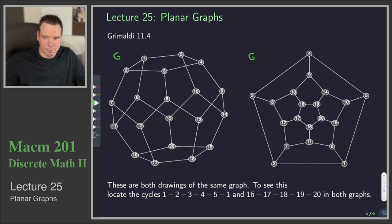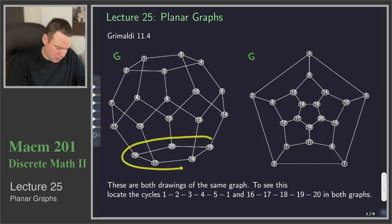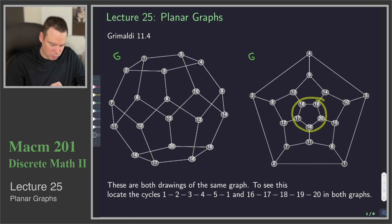How can we check to see if they are the same graph? You can notice that there is a cycle on the vertices 1 through 5 here, and there is also a cycle on the vertices 1 through 5 around the outside. We have another cycle on the vertices 16 through 20, and that same cycle on the vertices 16 through 20 here. You can follow through that all the connections on one graph are the exact same connections on the other graph. So these are the same graph.